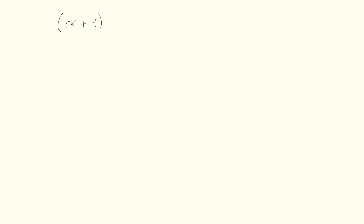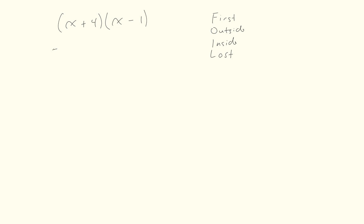To practice multiplying two binomials, we often use the acronym FOIL. FOIL reminds us how to multiply them out: the two First terms multiply each other, the two Outside terms multiply each other, the two Inside terms multiply each other, and the two Last terms multiply each other — First, Outside, Inside, Last.